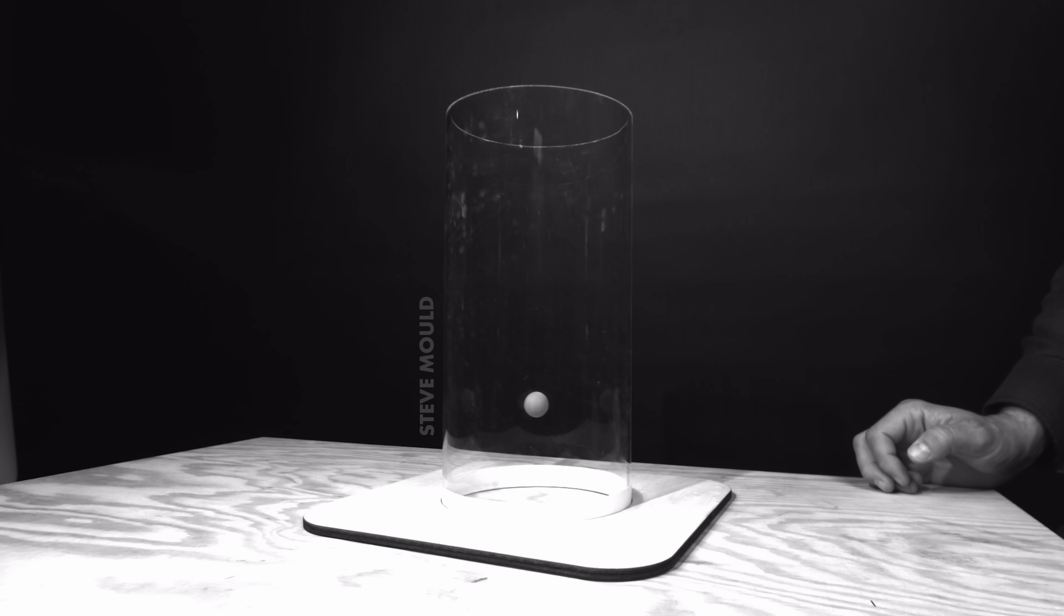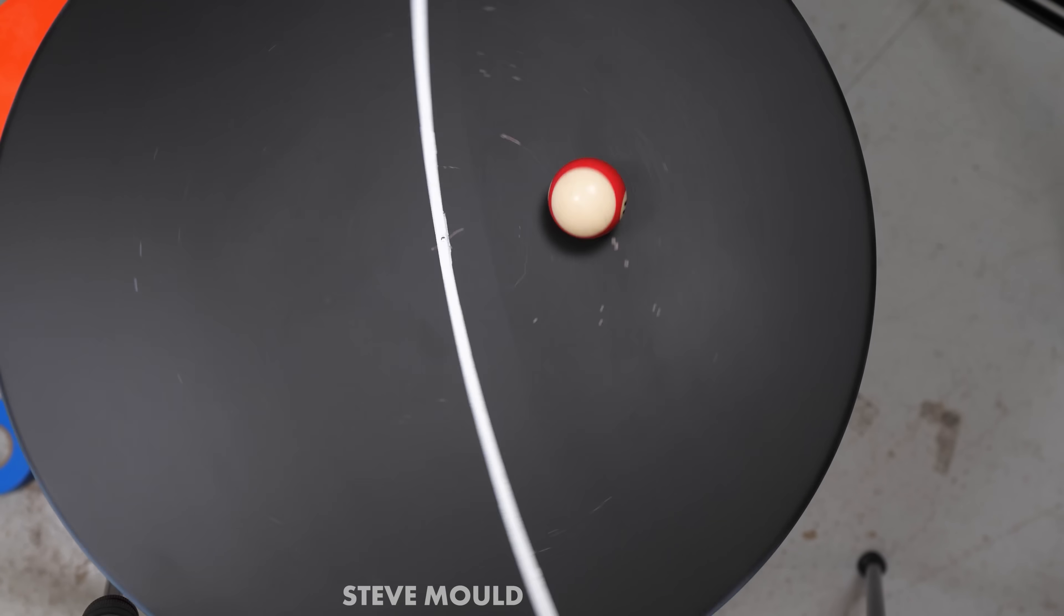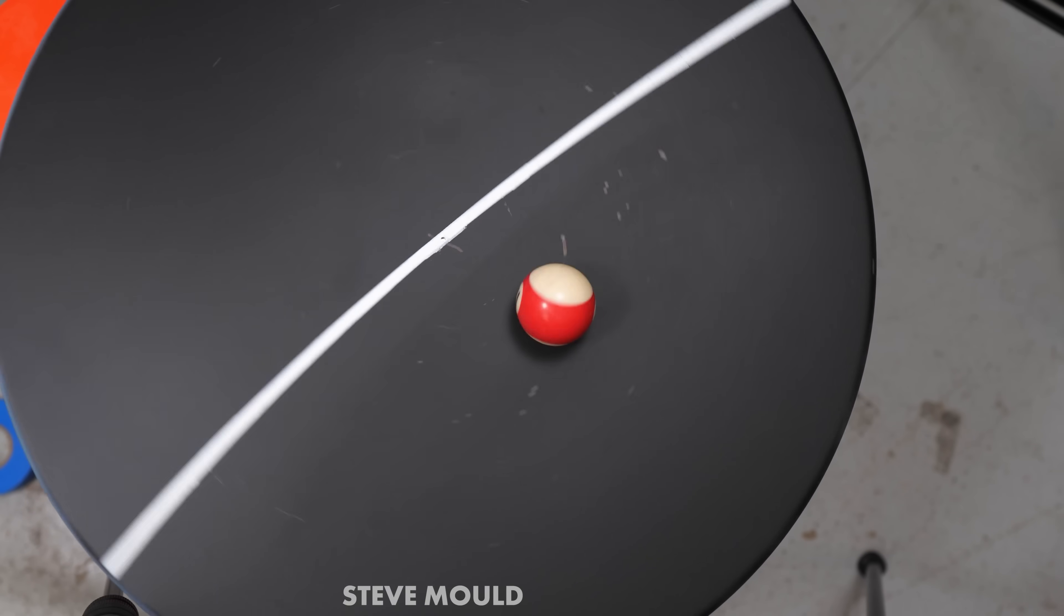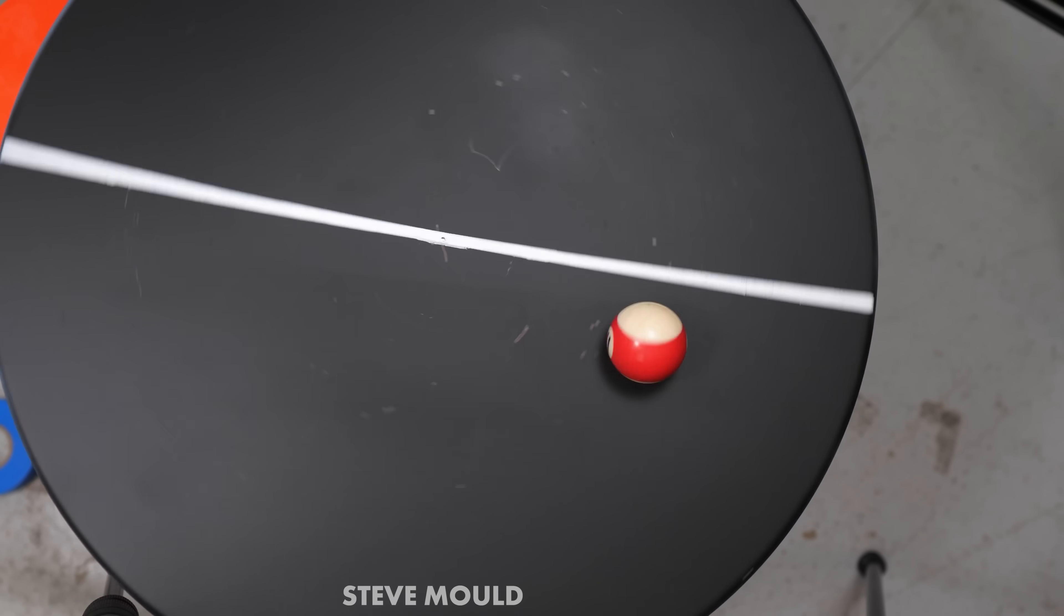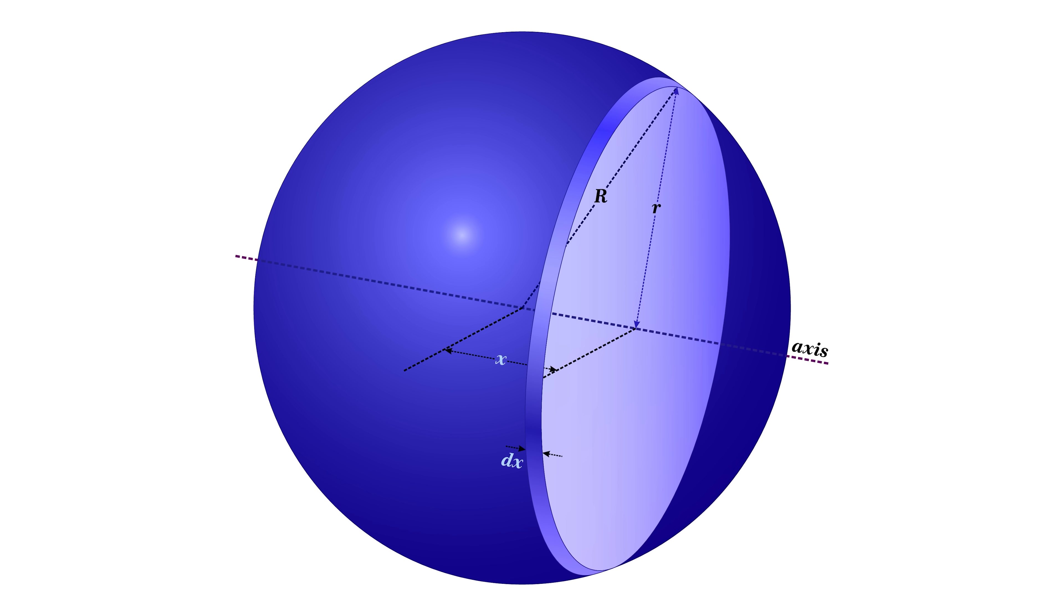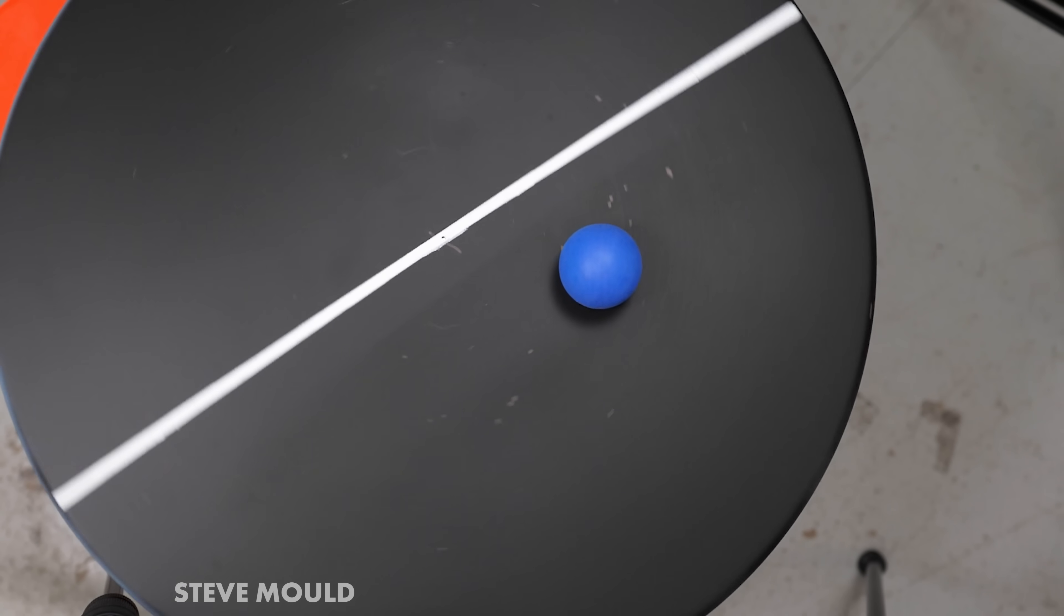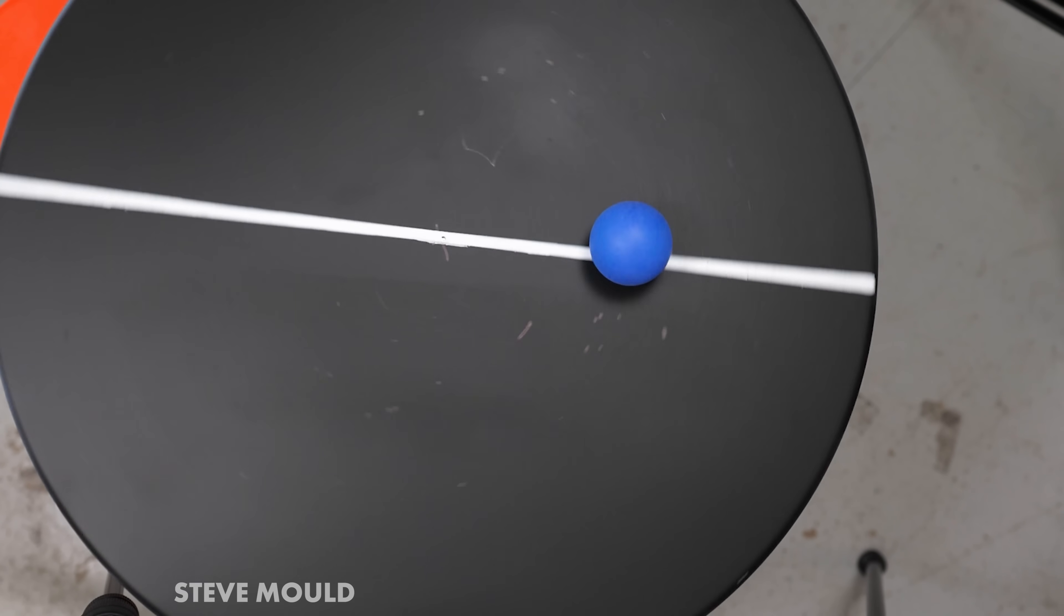Those numbers seven over two and five over two might ring a bell actually, if you remember my video about the turntable paradox. In that demonstration, there are seven turns of the turntable for every two orbits of the ball. I explained in that video that the numbers come from calculating the moment of inertia of a sphere, which is just how hard it is to rotate the sphere. To calculate that you have to integrate the moment of inertia of all the little masses throughout the ball. You get a different answer for a hollow sphere, which is why you get a different number for a hollow ball, both in the turntable and in the cylinder.